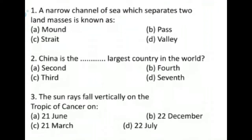A narrow channel of sea which separates two land masses is known as a strait. It is called the Palk Strait. Pakistan, India and Sri Lanka are among the relevant countries. It is associated with the Bay of Bengal and Arabian Sea.